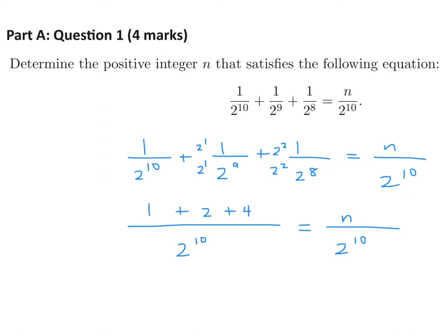Now we've got 2 to the power of 10 as the denominators on both sides, so get rid of them. On this side it just becomes 7, and on that side is n. And there you go, n is equal to 7.